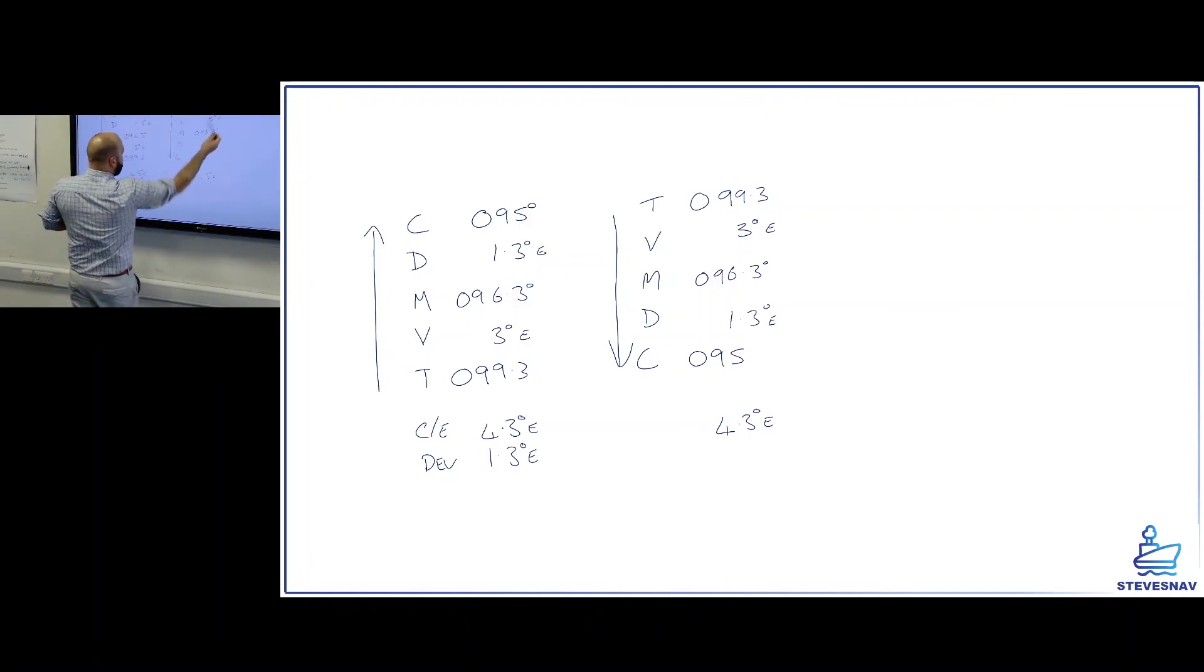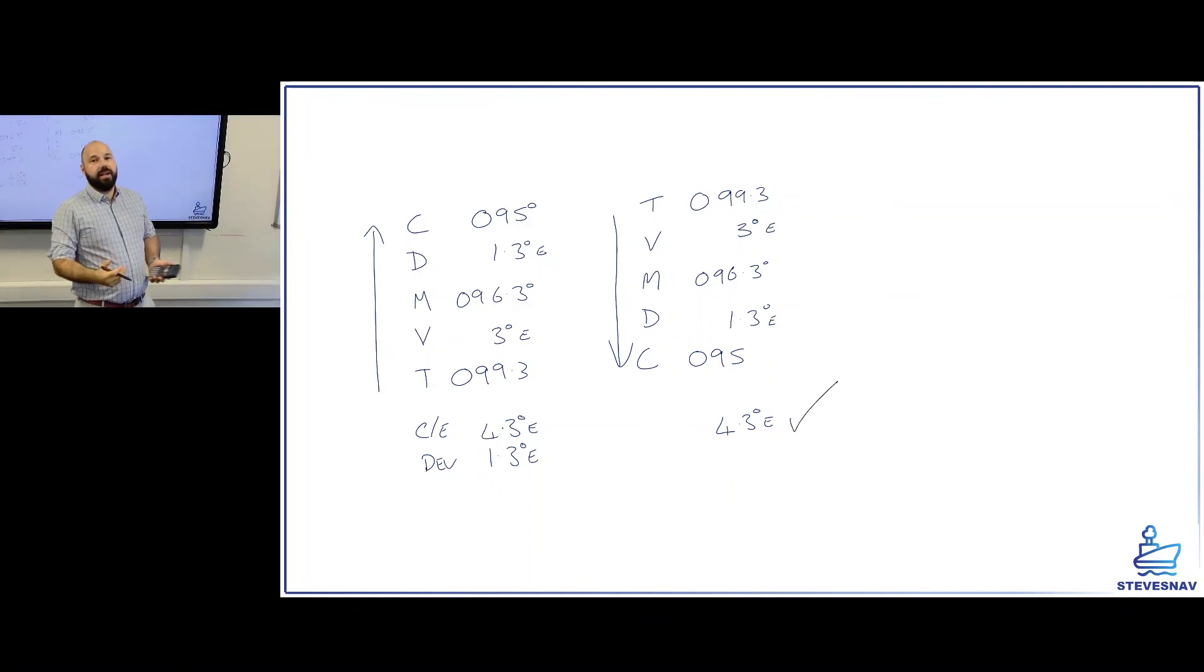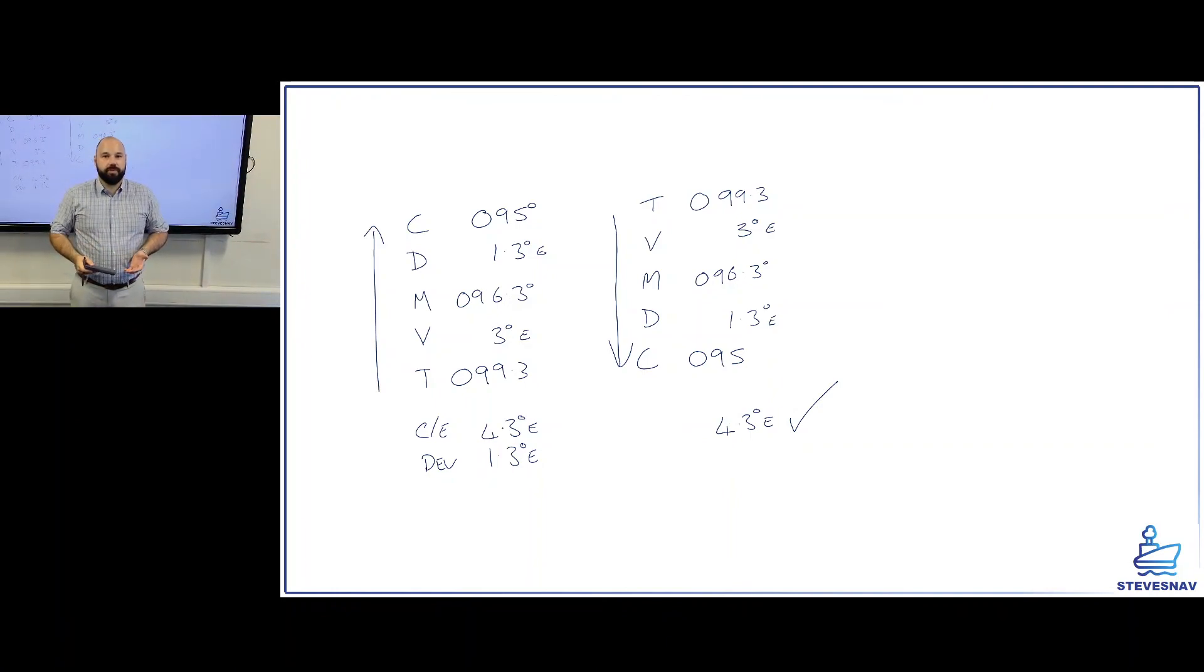Check your numbers. 99.3 minus 95 is 4.3. Add those two up there, 4.3. We're happy we've got that way. And that is how you do a compass error using an azimuth of the sun. That's how we get an azimuth. That's how we do the compass error.